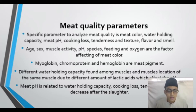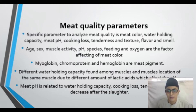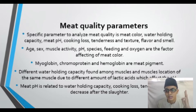Myoglobin, chromoprotein, and hemoglobin are the common pigments that exist in the meat. Different water holding capacity is found among the muscles and muscle locations of the same muscle due to different amounts of fatty acids, which affects the pH of the meat. The pH of the meat is related to water holding capacity, cooking loss, and tenderness, and pH decreases after slaughter.